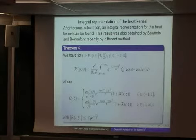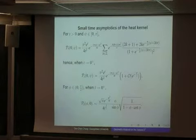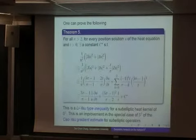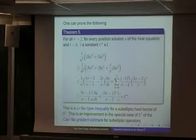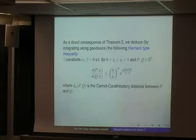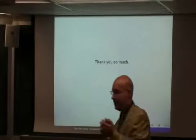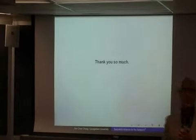That gives you the heat kernel. We can have some small time asymptotic expansion and also we have Gårding-type estimates. From the Gårding-type, we have some time inequality. I don't have time to explain. Thank you very much.